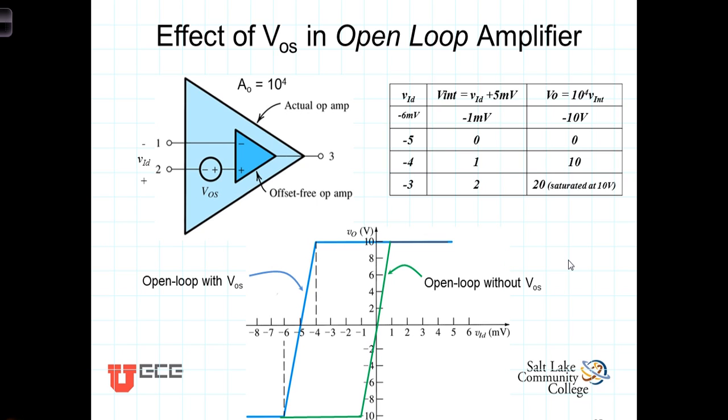To see this, consider the graph of Vout versus the input differential voltage for both the ideal case and the case with an offset voltage in the operational amplifier. The open loop amplifier gain for our example here will be 10 to the 4th. Now in the ideal case, Vout will equal 10 to the 4th times VI sub D.